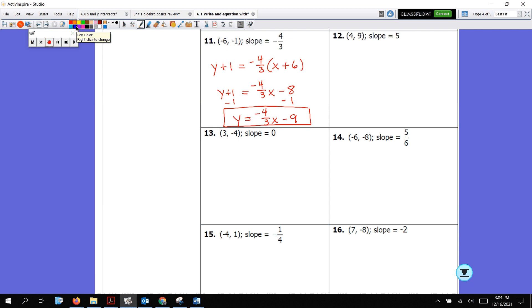All right. Let's look at number 12. I'll get into point slope. y minus 9 equals 5 times x minus 4. This gives you 5x minus 20. y minus 9. So I add 9, y equals 5x minus 11.